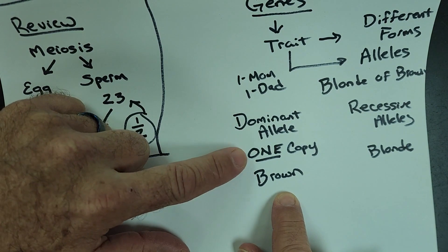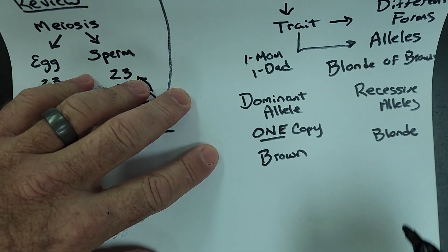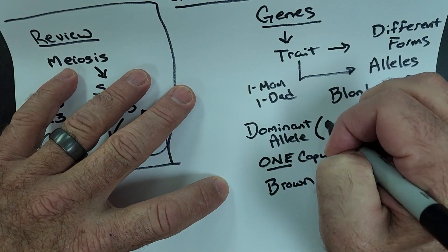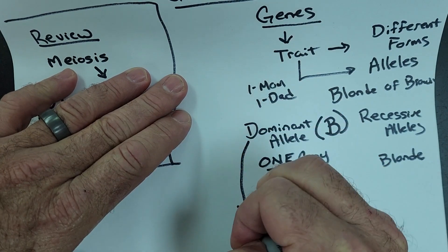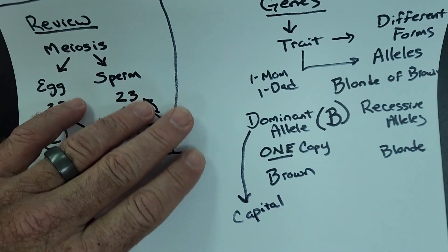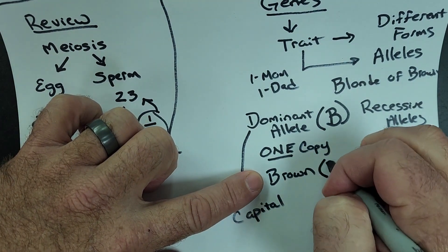We always express a dominant allele as a capital letter. So in this case, we're going to pick capital B for brown hair.